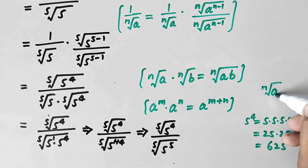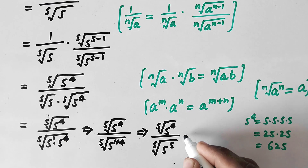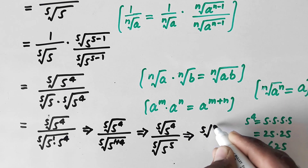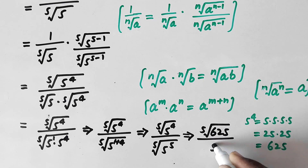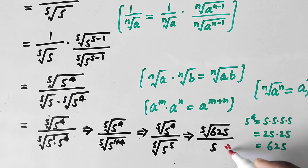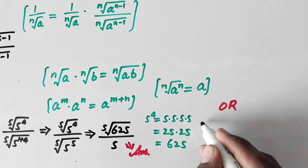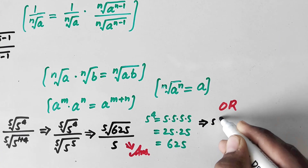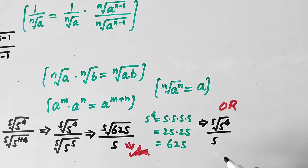On the denominator, we apply the radical property: the nth root of a^n equals a. So the fifth root of 5^5 equals 5. The final simplified answer is the fifth root of 625 divided by 5.